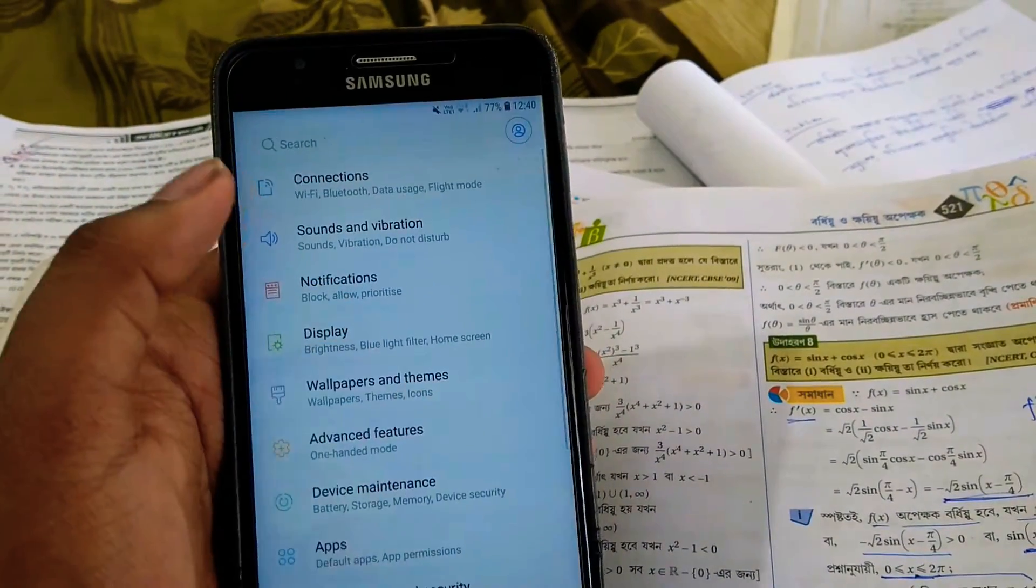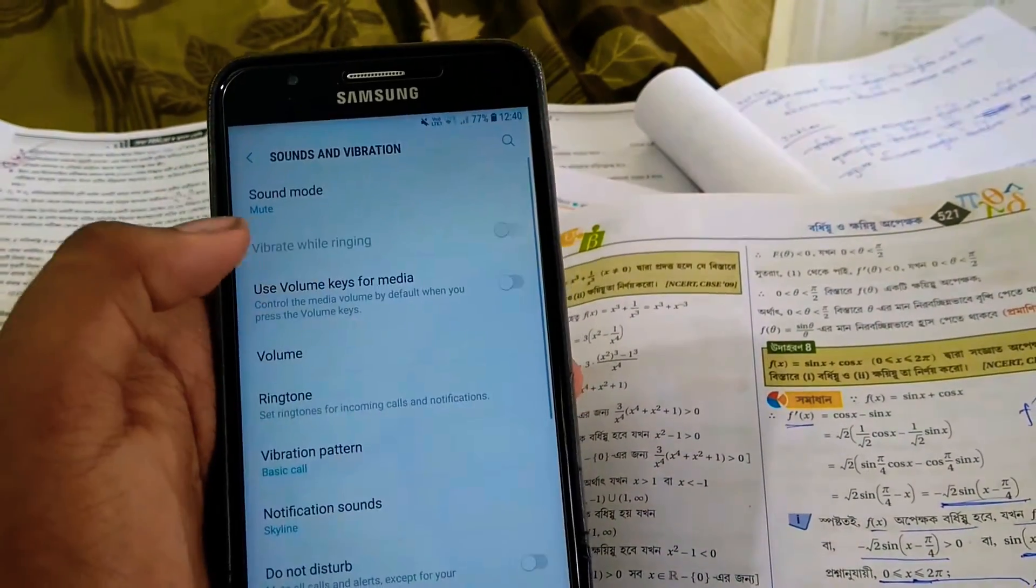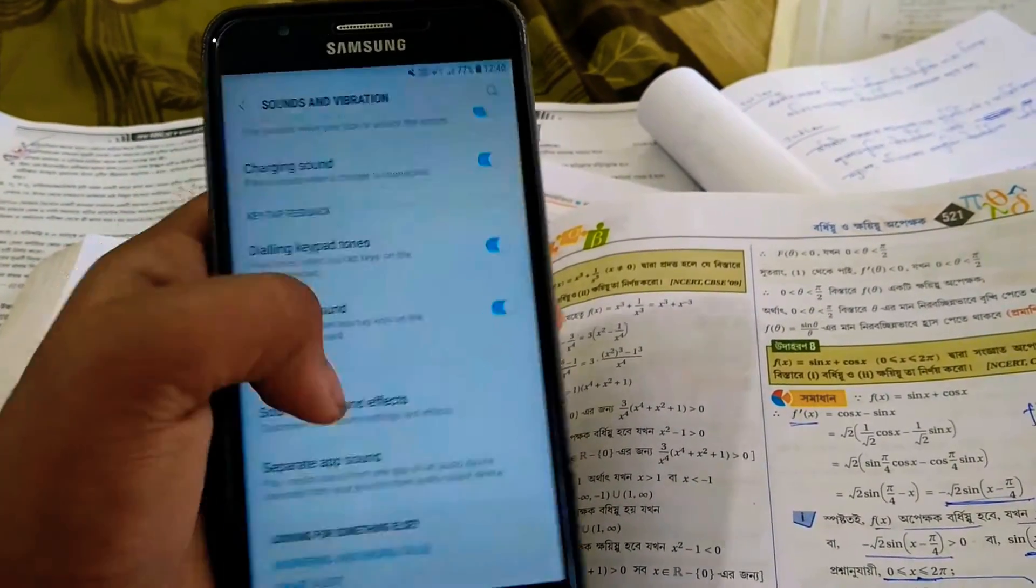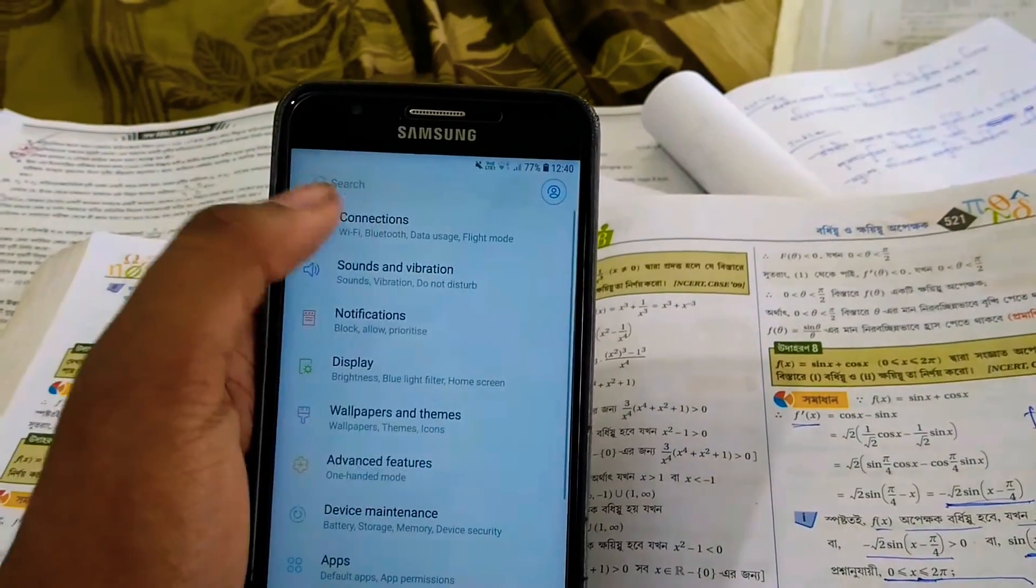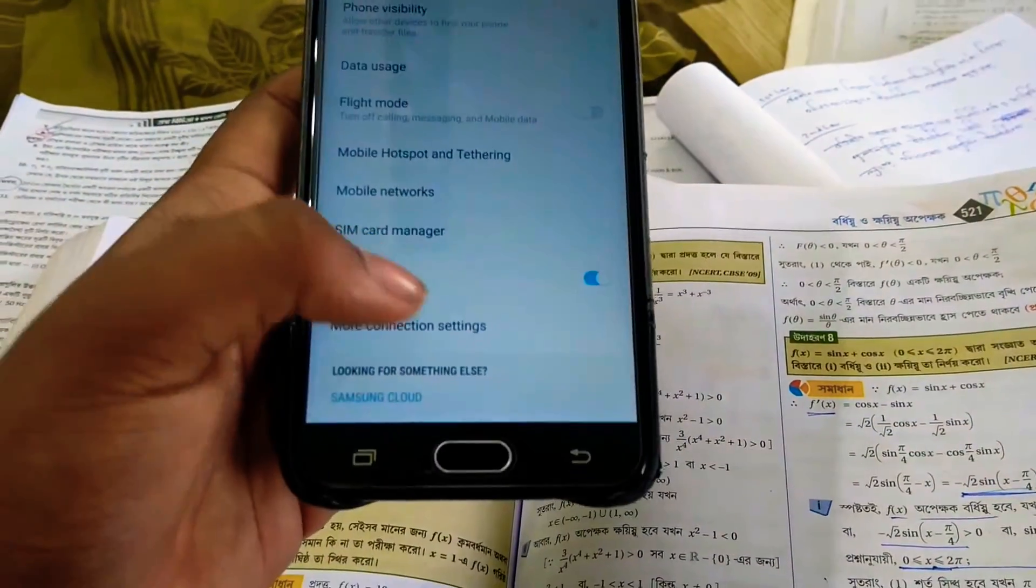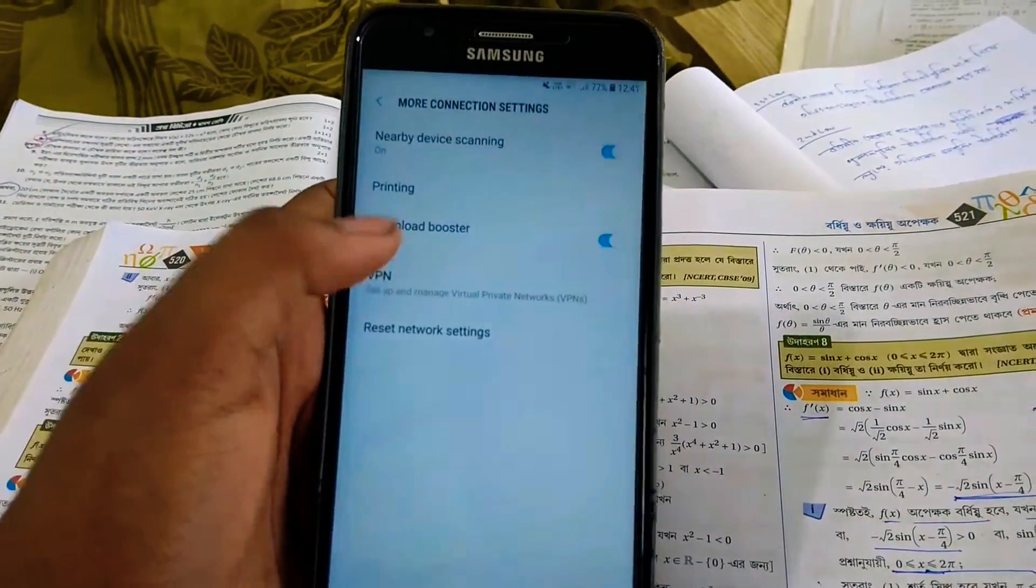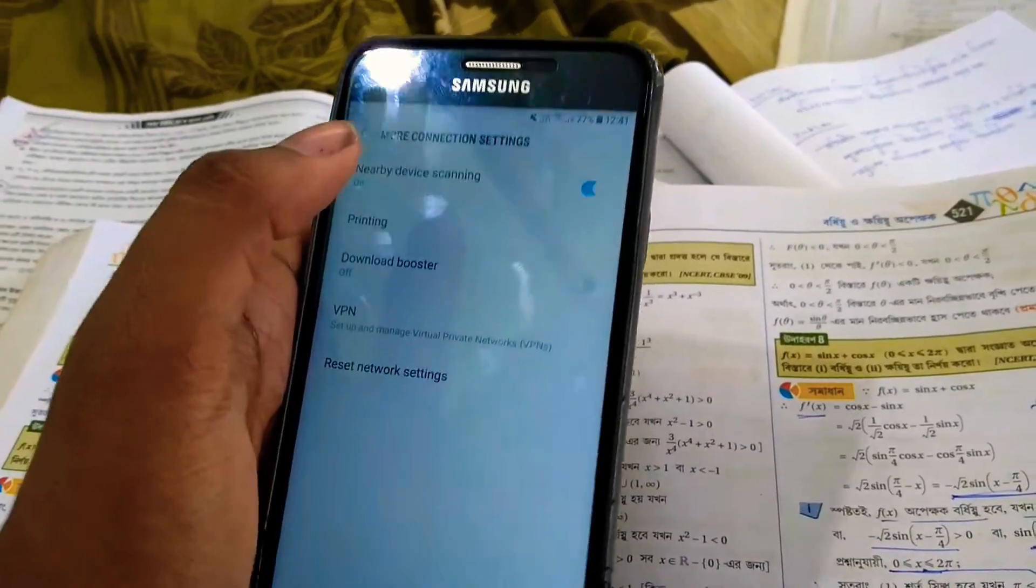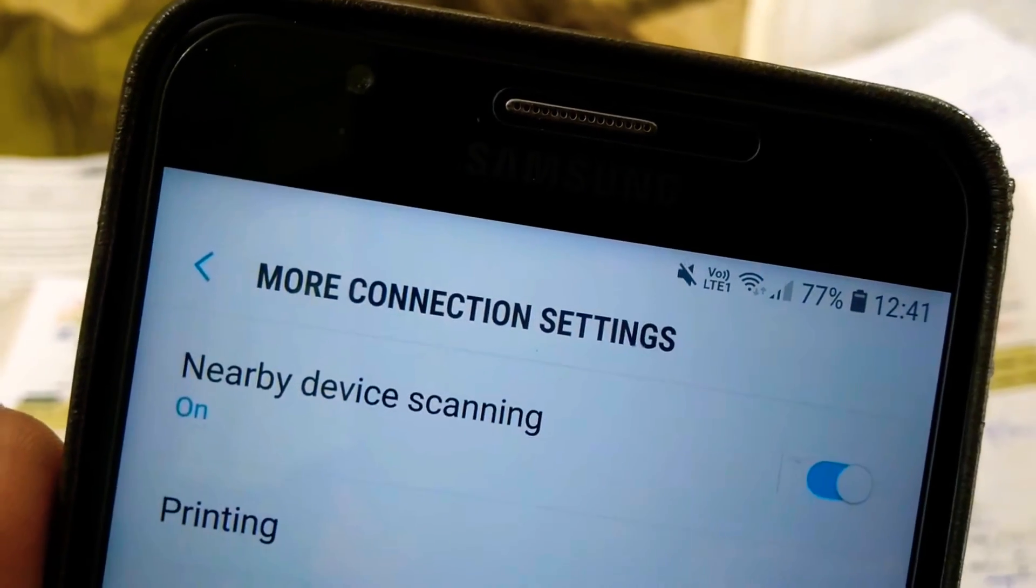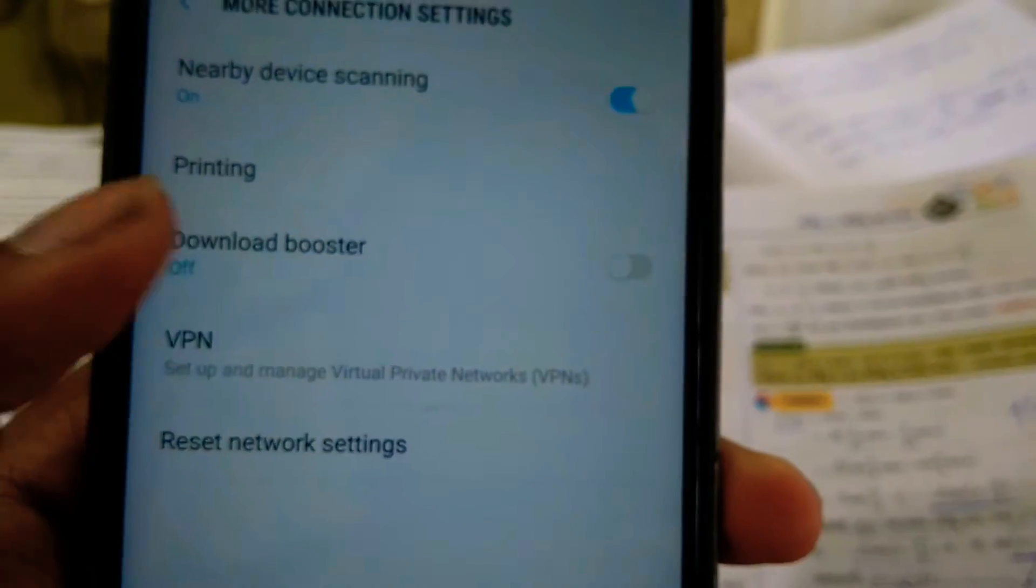Everything is as usual. If you go to connection, this is the interesting part. Go to more connection settings, and if you go to download booster, it was turned off by default. Let me just focus—my camera is kind of weak in focusing. This is download booster—it speeds up downloads over 30 MB from Galaxy Apps and Play Store by using WiFi and mobile data at the same time. I haven't used this but this seems quite interesting.